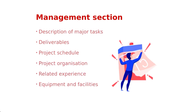The management section is the second part of the proposal. It includes a description of all the major tasks, the deliverables, your project schedule, your project organization — who does what by when — related actions, and the equipment and facilities you will need. This is the heart of what the project is all about. It details who is doing what, by when, and most importantly how.